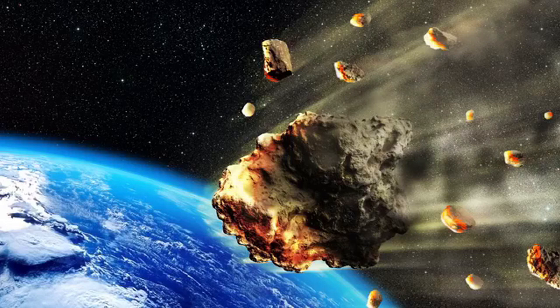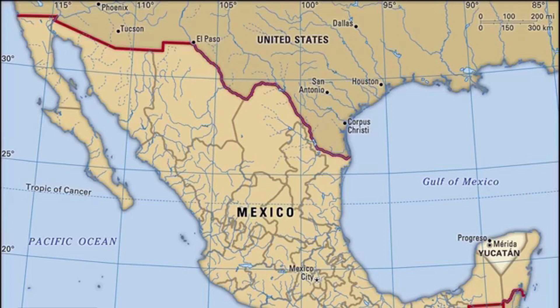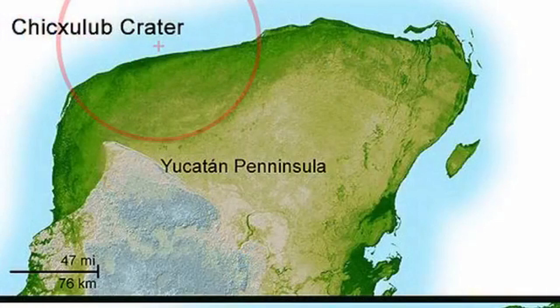Where it hit is called the Yucatan Peninsula. Look on the map — it's in Mexico, over to the right of Mexico in that light area near the Gulf of Mexico. That is the Yucatan Peninsula. Here is the spot where it hit. It didn't hit on land — it actually hit in the water.